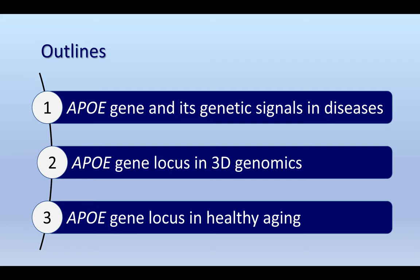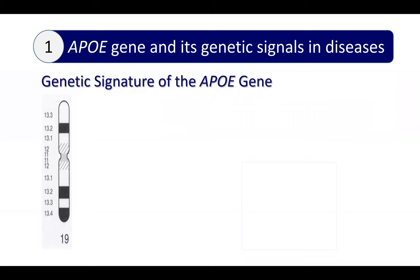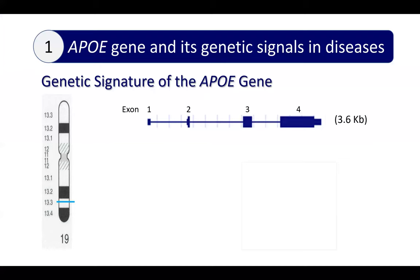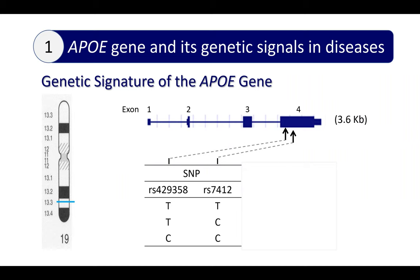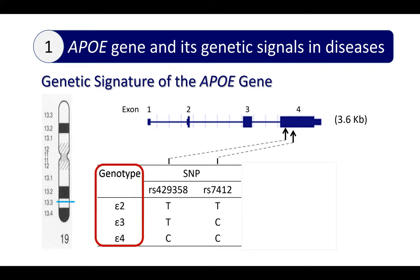The APOE gene is located on chromosome 19. It's a very small gene — only four exons. Two SNPs located within exon 4 define the three versions of the gene, called E2, E3, and E4. This E2, E3, E4 is also referred to as the genotype of ApoE.